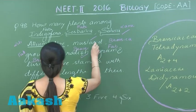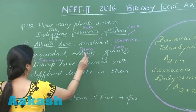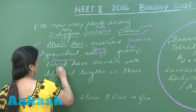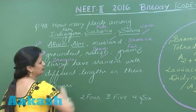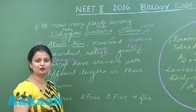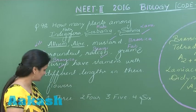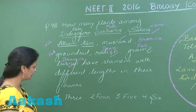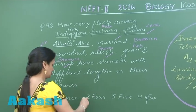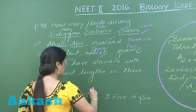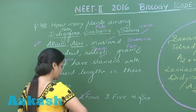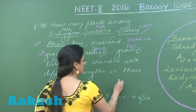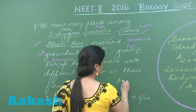So Salvia, Mustard, Radish, and Turnip — these four have stamens which show differential length. Therefore, the right option for this question is option number two.